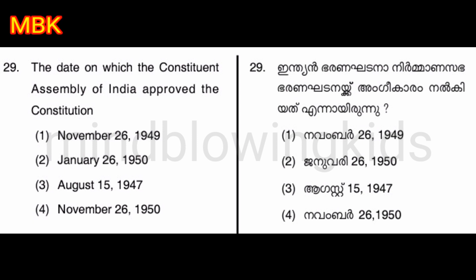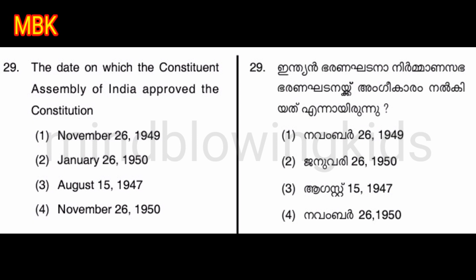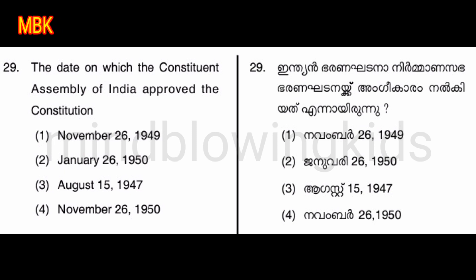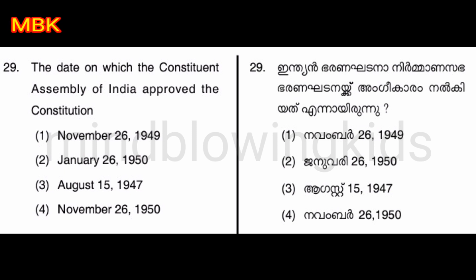The date on which the Constitution Assembly in India approved the Constitution. Option one: November 26, 1949. Option two: January 26, 1950. Option three: August 50, 1947. Option four: November 26, 1950. The answer is option one — November 26, 1949.